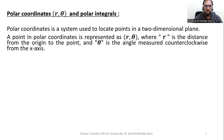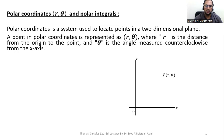First of all, what is a polar coordinate system? A polar coordinate is a system which is used to locate a point in a two-dimensional plane. A point in polar coordinates is represented by (r, θ), where r is the distance of the point from the origin and θ is the angle measured in counterclockwise direction with the positive x-axis.